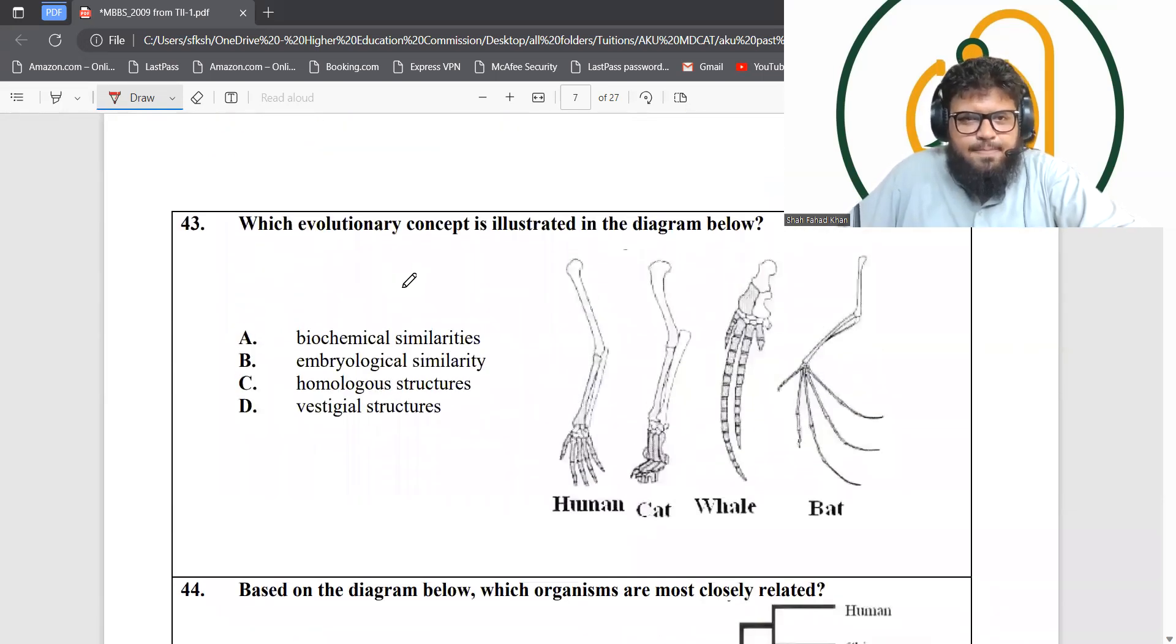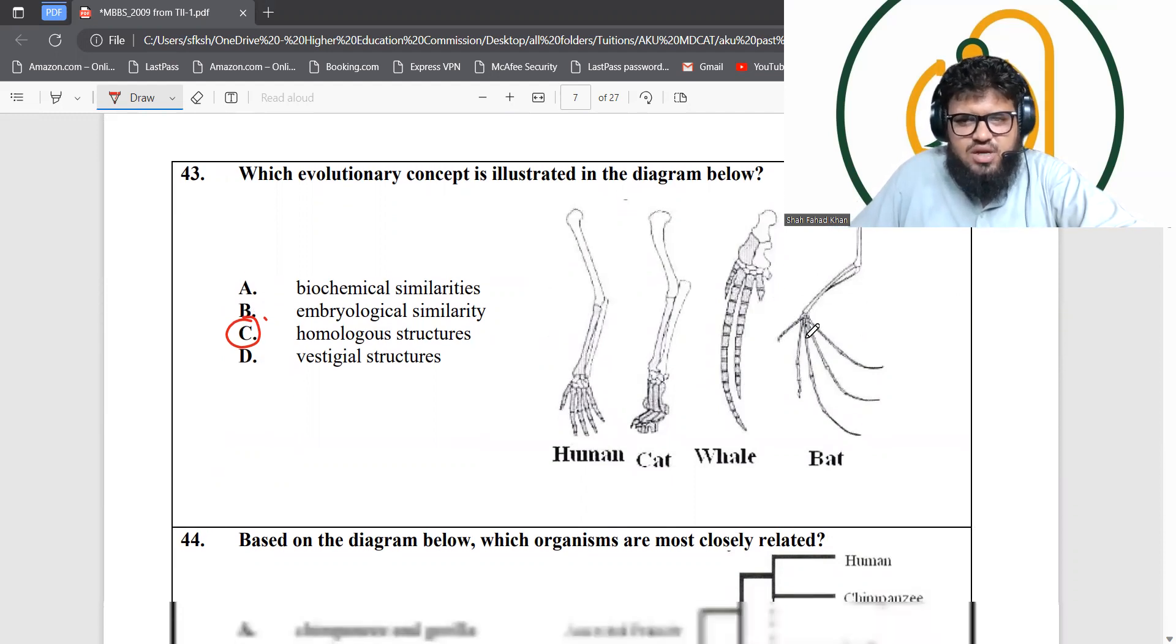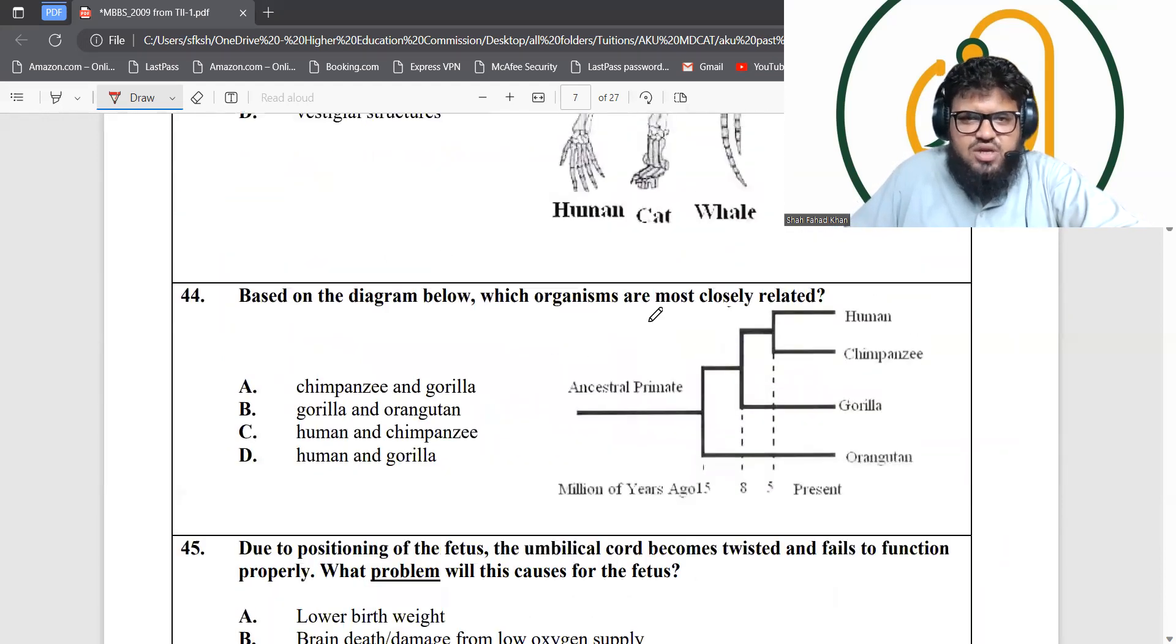Questions 43 and 44. The evolutionary concepts shown by this diagram involve homologous structures because they have similar structure. They're modified, but these structures are quite similar to one another. Then, based on the diagram, which are most closely related? Human and chimpanzee—if you look at them, they're right next to each other. So human and chimpanzee are most closely related.